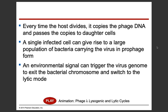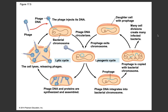A single infection can give rise to a large population of bacteria carrying the virus in prophage form. The prophage form is when the viral DNA is incorporated into the host cell DNA — the viral DNA is hiding out. The cell doesn't know it's there because it's just A, T, G, and C. It can't detect that an A doesn't belong there; it just pairs it with something and moves on. Any environmental signal can trigger the virus genome to exit the bacterial chromosome and switch to the lytic mode — that's what transfers from the lysogenic cycle to the lytic cycle.